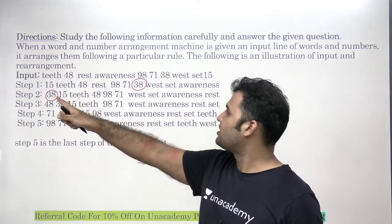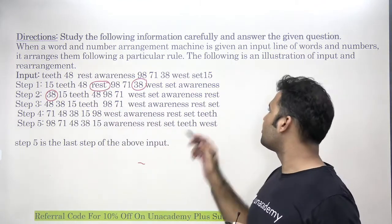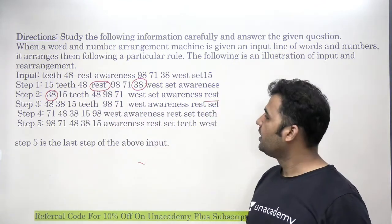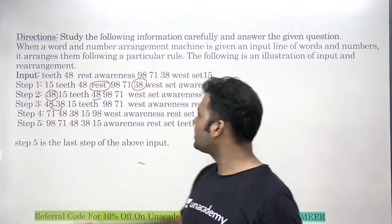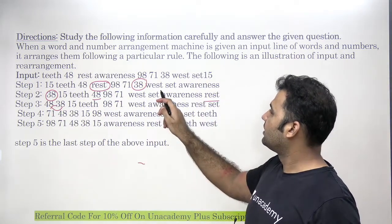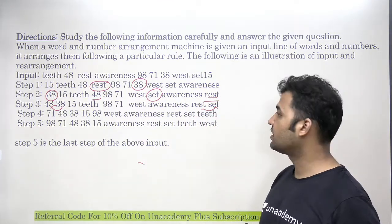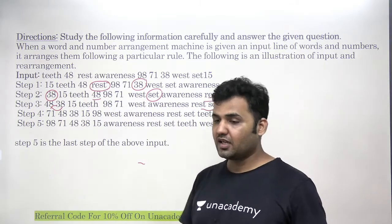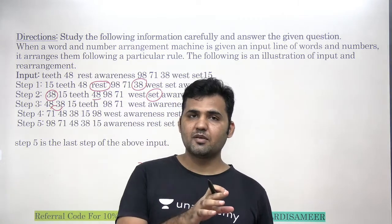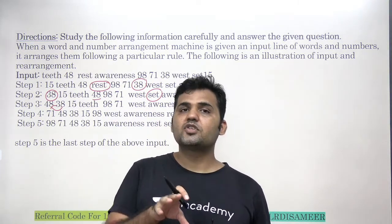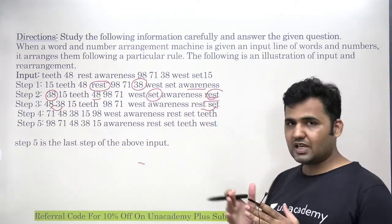Similarly, in the second step the second smallest alphabet 'rest' is moving on the right hand side. Then the third largest element 48 is placed on the left of 38, and the third smallest alphabet 'S' is placed on the right hand side of the previous moved element 'west'. So this is called filling from the outside — a new element is placed on the left of the previous moved element when moving left, and on the right of the previous moved element when moving right.